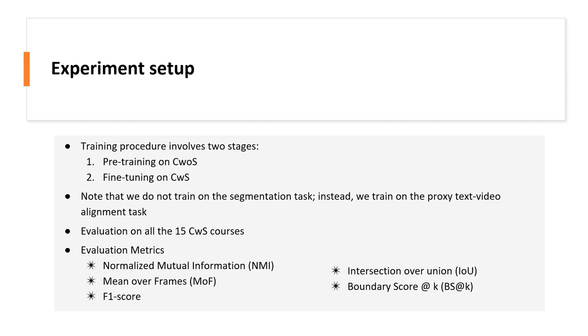We evaluate the segments obtained from TWFinch using five different metrics, which are NMI, MOF, F1 score, IOU, and boundary score at K. Let us have a look at the quantitative results.